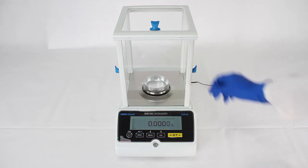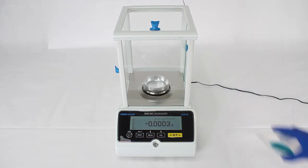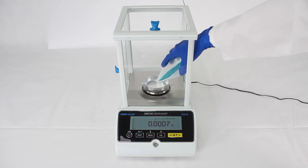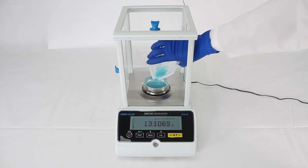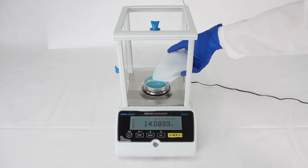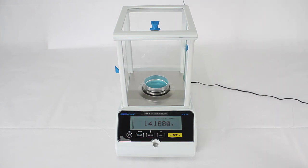Semi-micro, analytical, and milligram models have draft shields with sliding glass doors. This boosts accuracy by eliminating the effects of breezes and reducing static electrical interference with the balance.